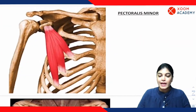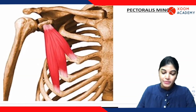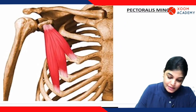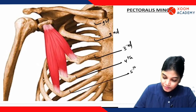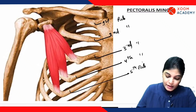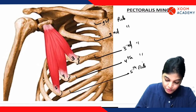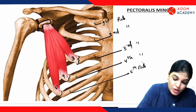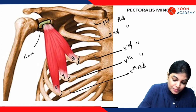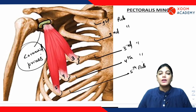Now let's talk about the second muscle in this category — the pectoralis minor muscle. I would like to explain the origin and insertion using this diagram. You can see the first, second, third, fourth, and fifth ribs. At the costochondral junction of the third, fourth, and fifth ribs, three slips of pectoralis minor originate and insert onto the coracoid process of the scapula. So it arises from the third, fourth, and fifth ribs at the costochondral junction and inserts onto the coracoid process.